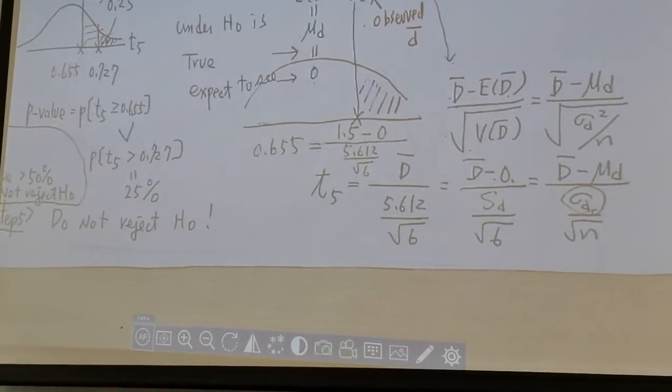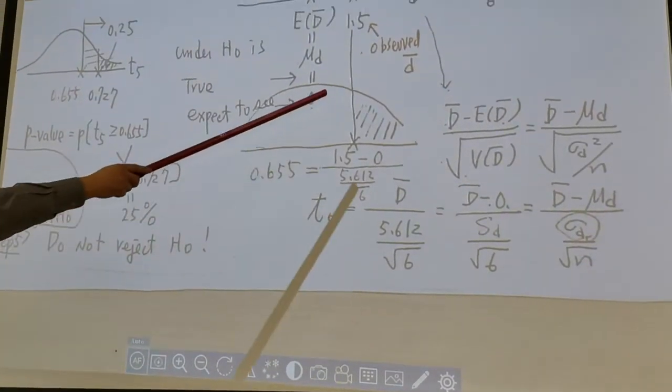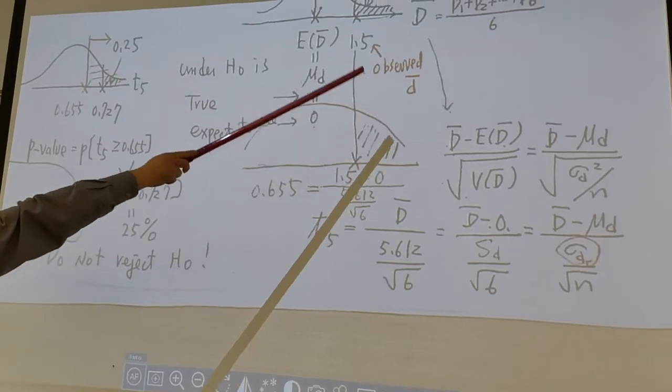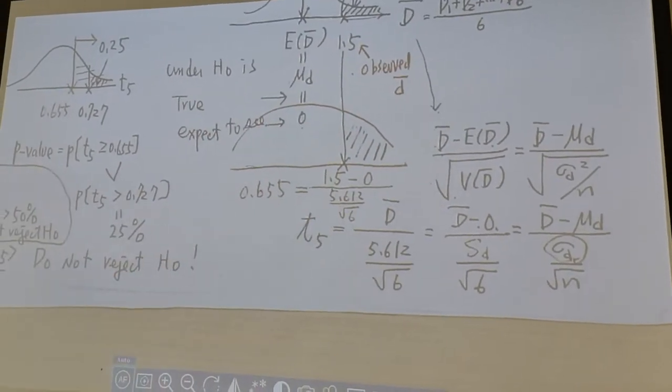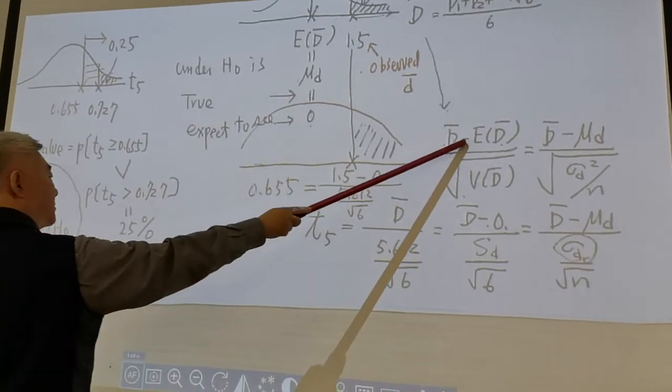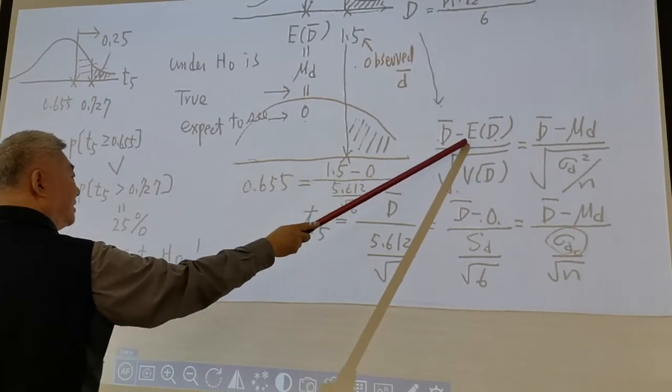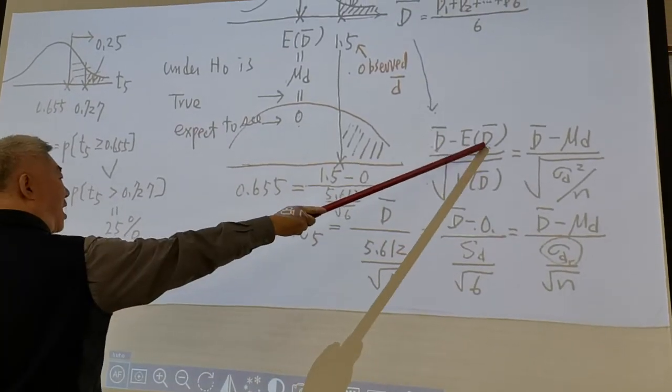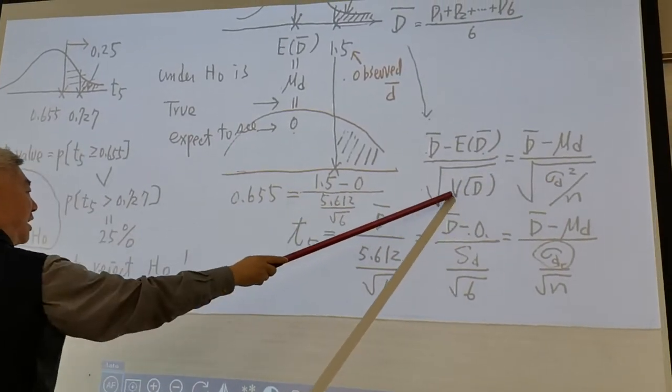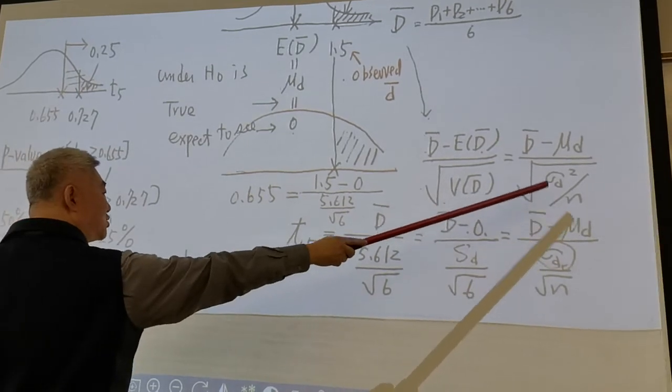In order to find the upper tail probability, our first step is standardize d-bar. And standardization goes this way. You subtract by the mean of this variable and then divide it by the standard deviation. Now, E(d-bar) is μd. Variance of d-bar is σd² over n.